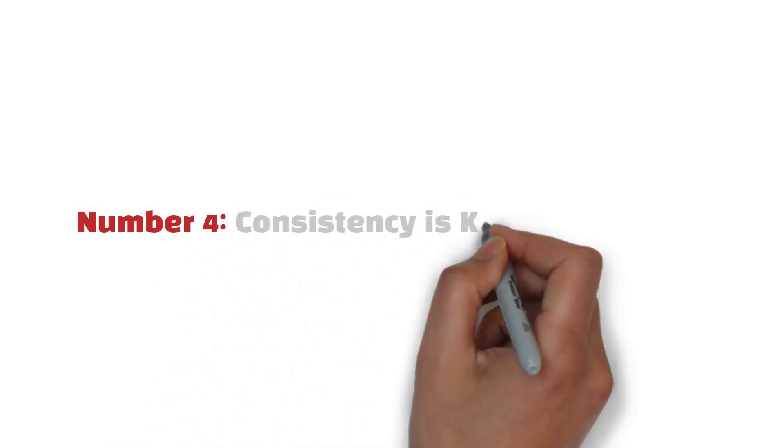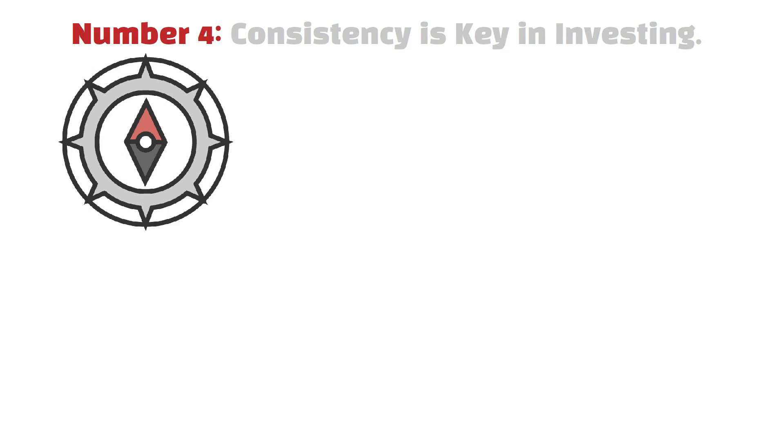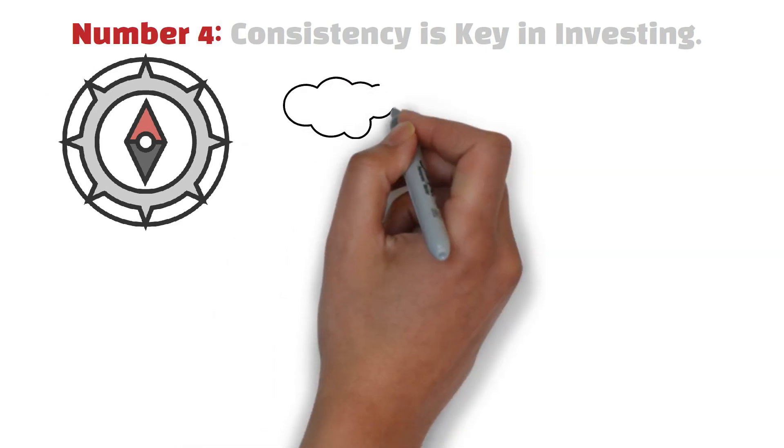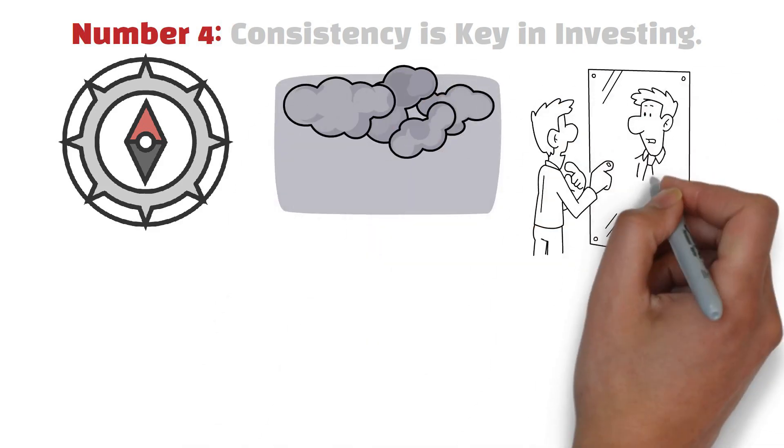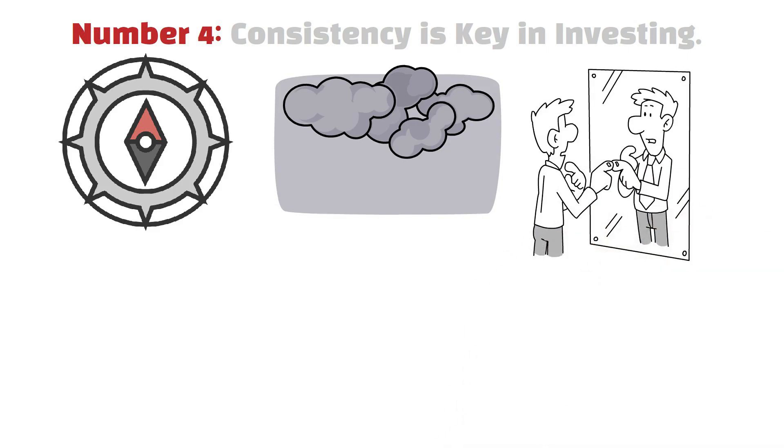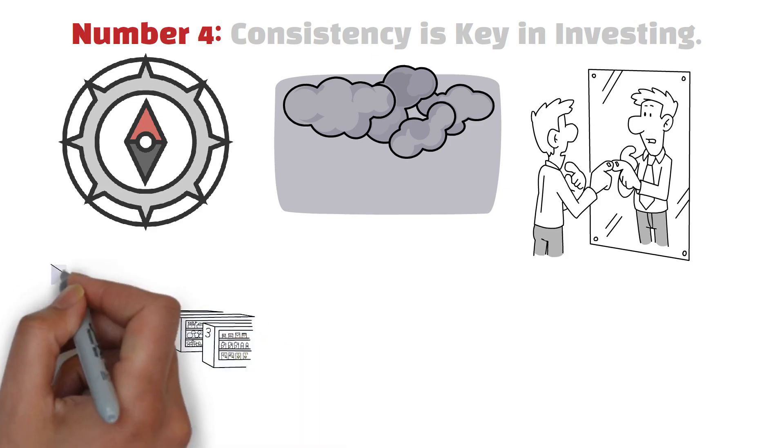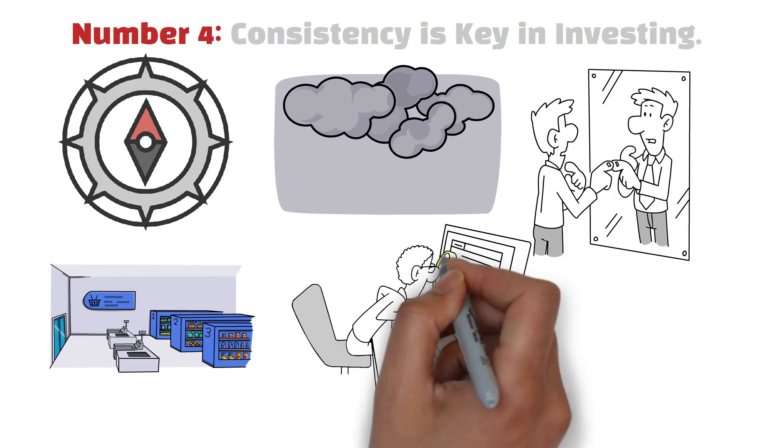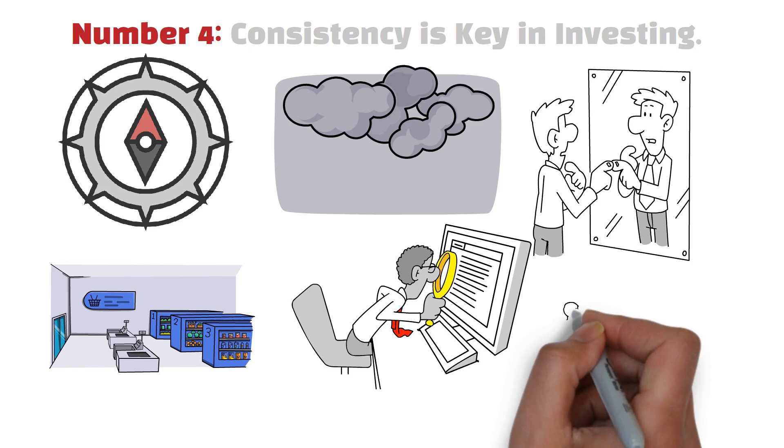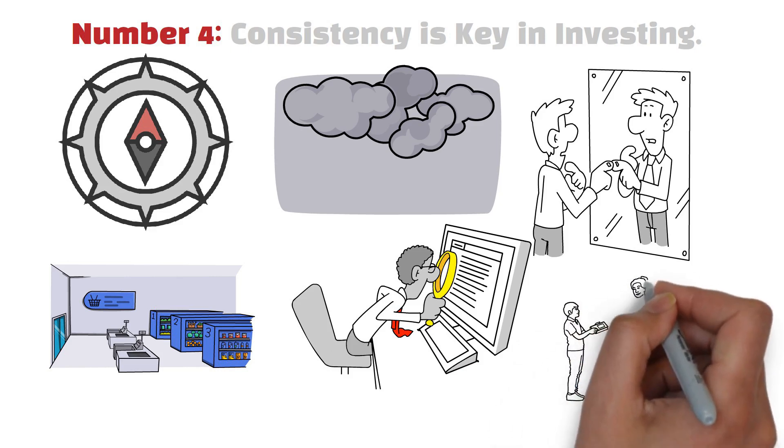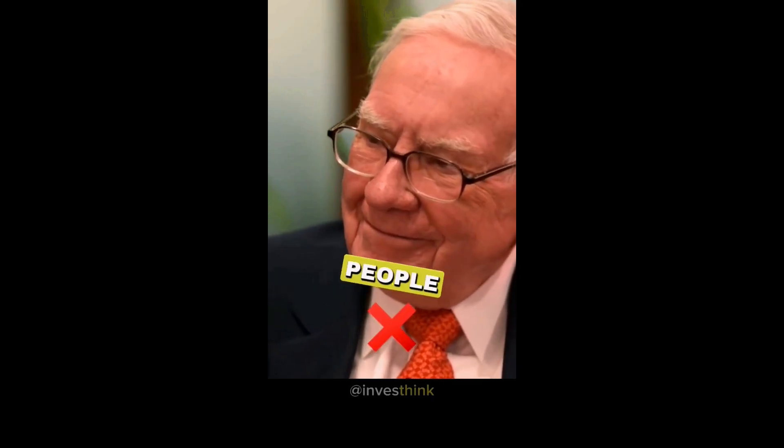Number 4. Consistency is key in investing. Navigating the seas of financial uncertainty requires a compass set on consistency, steering through the tempests with resilience. As we reflect on a tumultuous year, it becomes clear that attempting to time the market is akin to chasing shadows. Market fluctuations are inevitable, but the key is not to be swayed by short-term turbulence. Instead, focus on the unwavering principles of saving diligently and increasing income. For the youthful investor, the priority lies in building a robust foundation through consistent contributions and income generation.